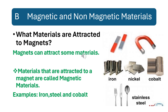Magnetic and non-magnetic materials — What materials are attracted to magnets? Magnets can attract some materials. Those materials that are attracted to a magnet are called magnetic materials. Examples of magnetic materials are iron, steel, and cobalt.